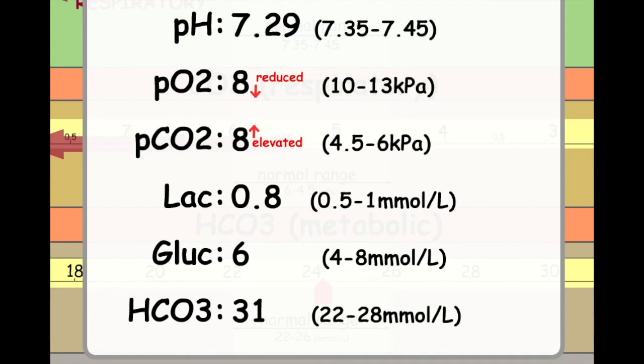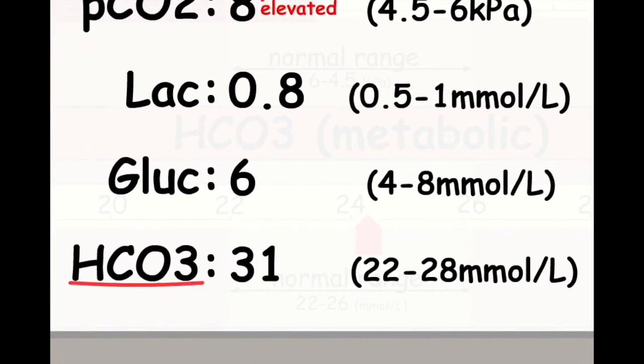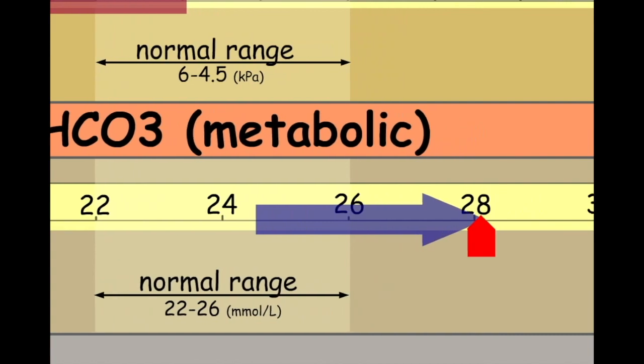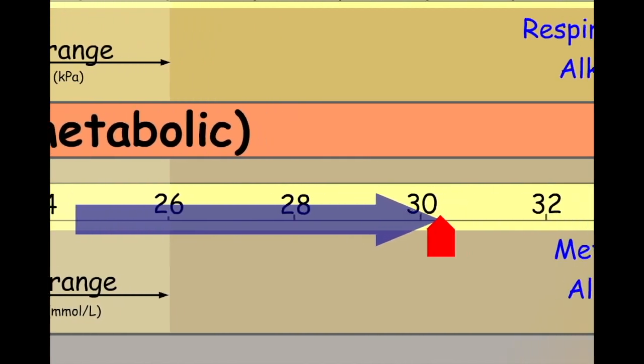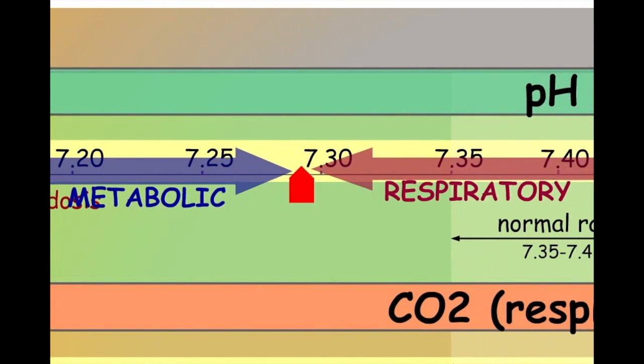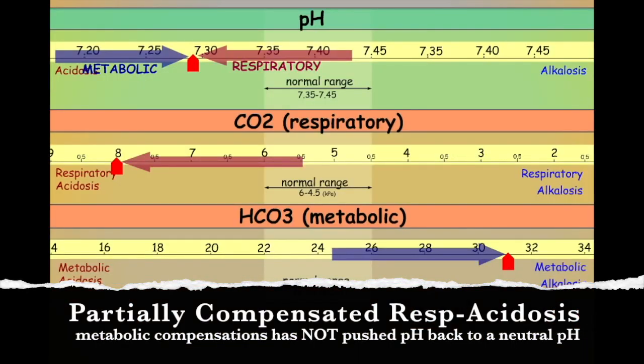The next thing to consider is: is there any evidence of metabolic compensation? Is the metabolic system trying to compensate for this respiratory acidosis? Well, if we look at the bicarb levels we can see that bicarb is 31—it is elevated. The kidneys are starting to up their production of bicarbonate and push more bicarbonate into the blood to try and combat this respiratory acidosis. However, the pH is still acidotic, so we know this isn't fully compensated. We're going to describe this as a partially compensated respiratory acidosis, because the pH hasn't returned back to a normal range.